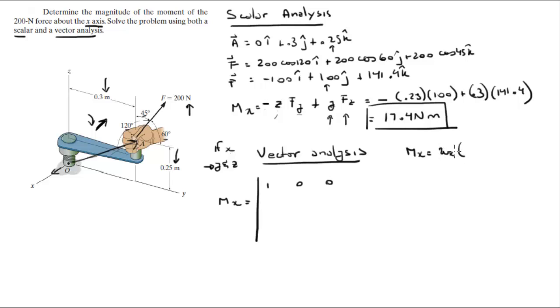This is the unit vector in the x - just 1 in the x direction. 0, 0.3, 0.25 is OA, and F is negative 100, 100, and 141.4. We write first and second column.